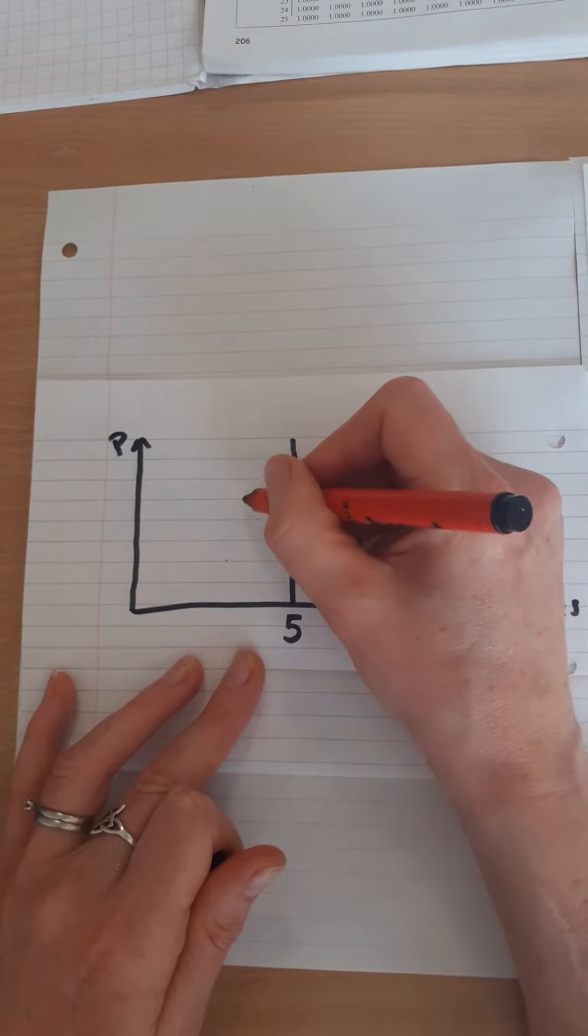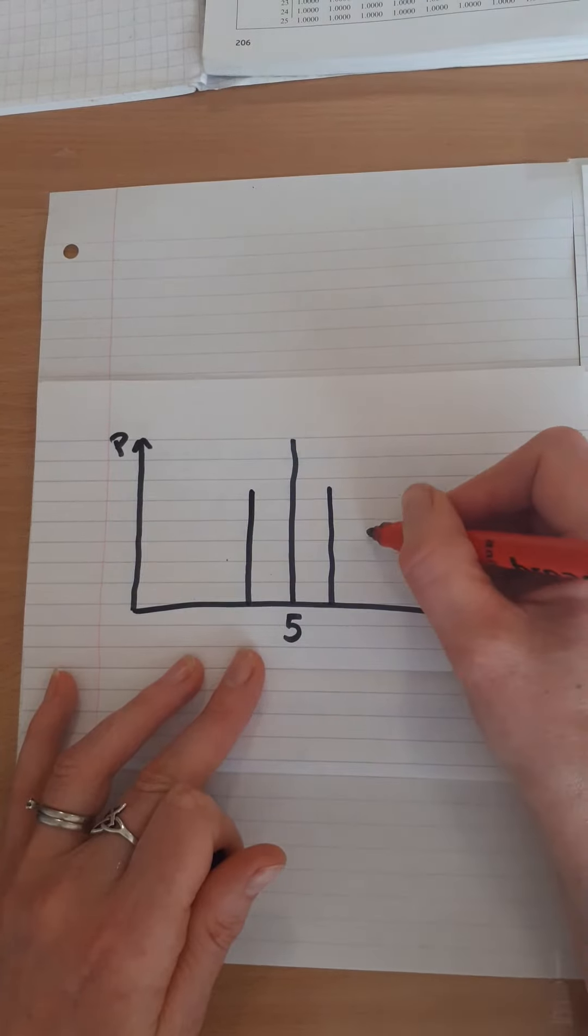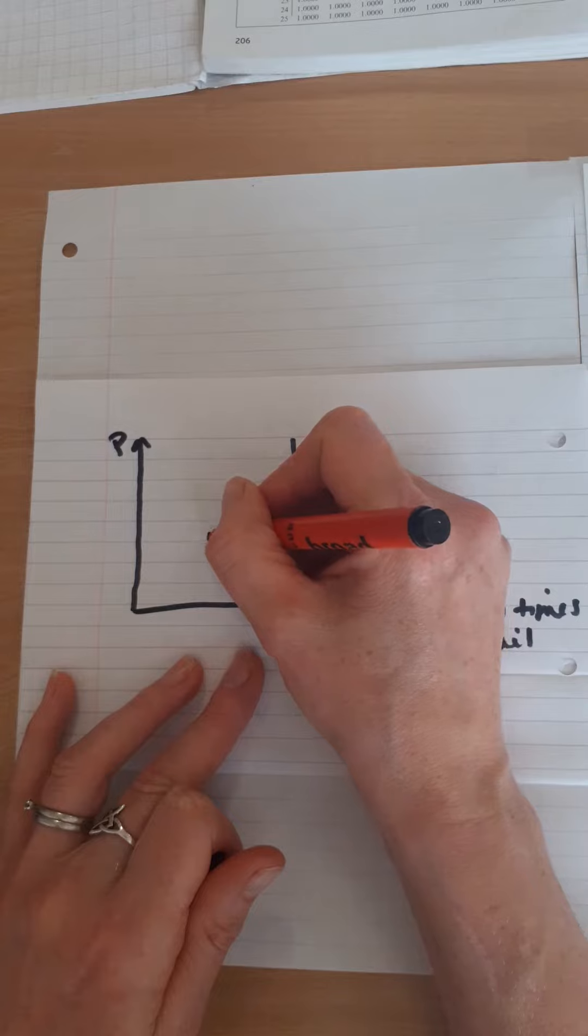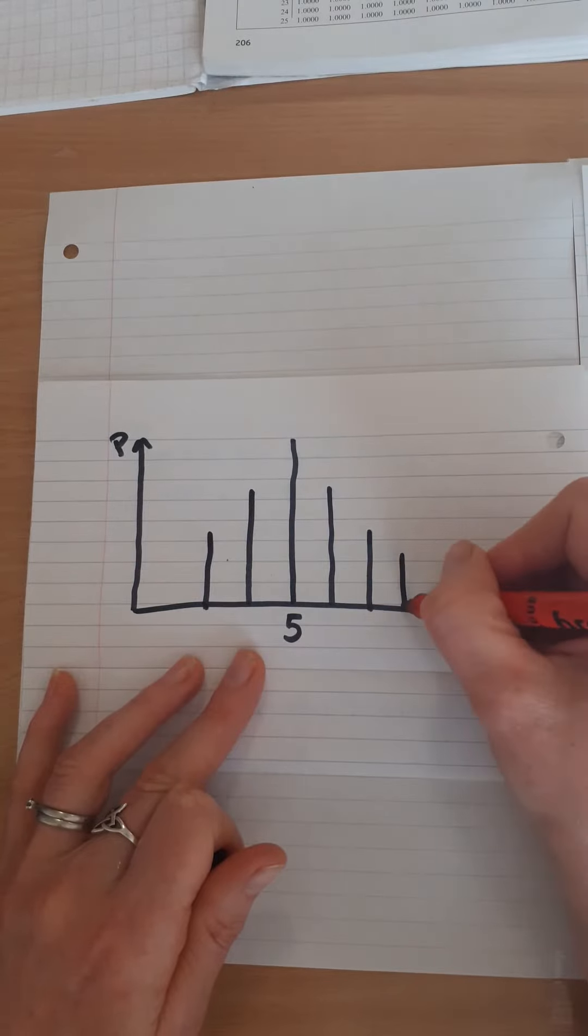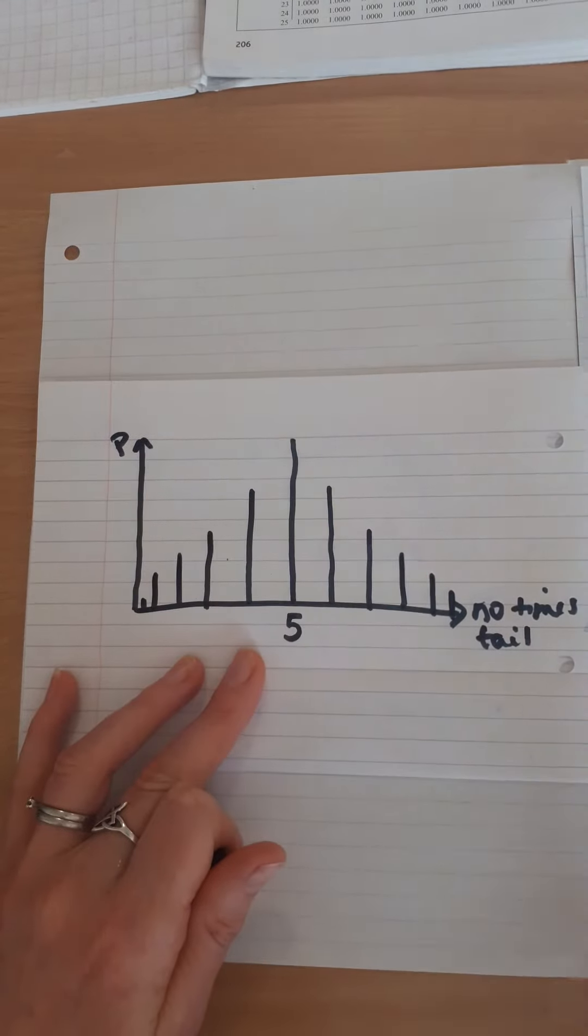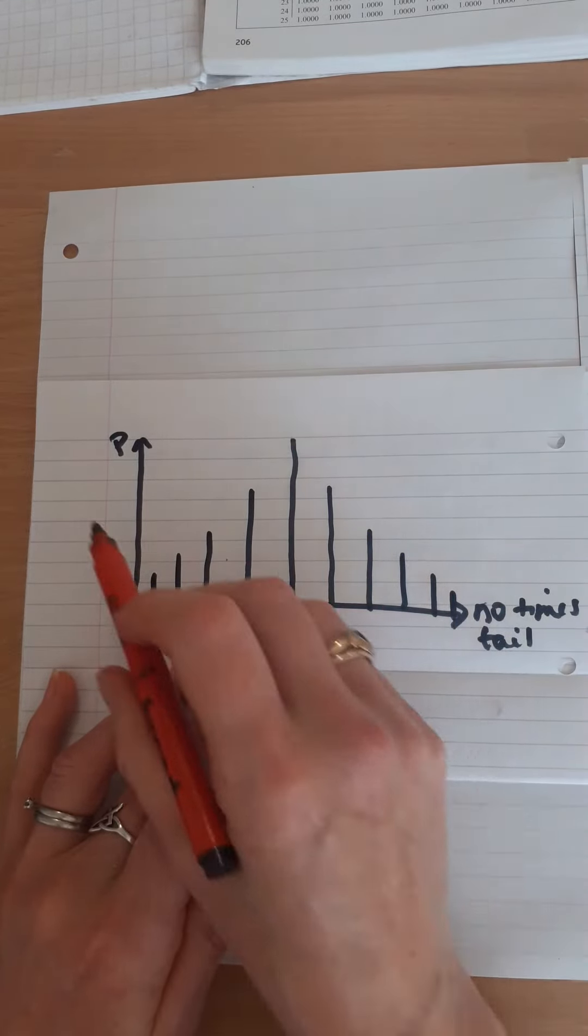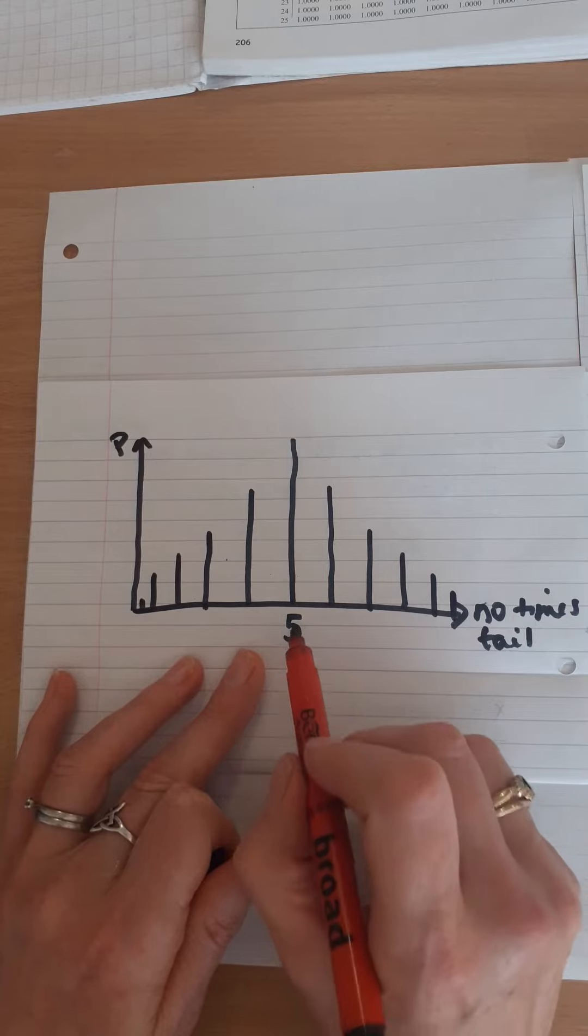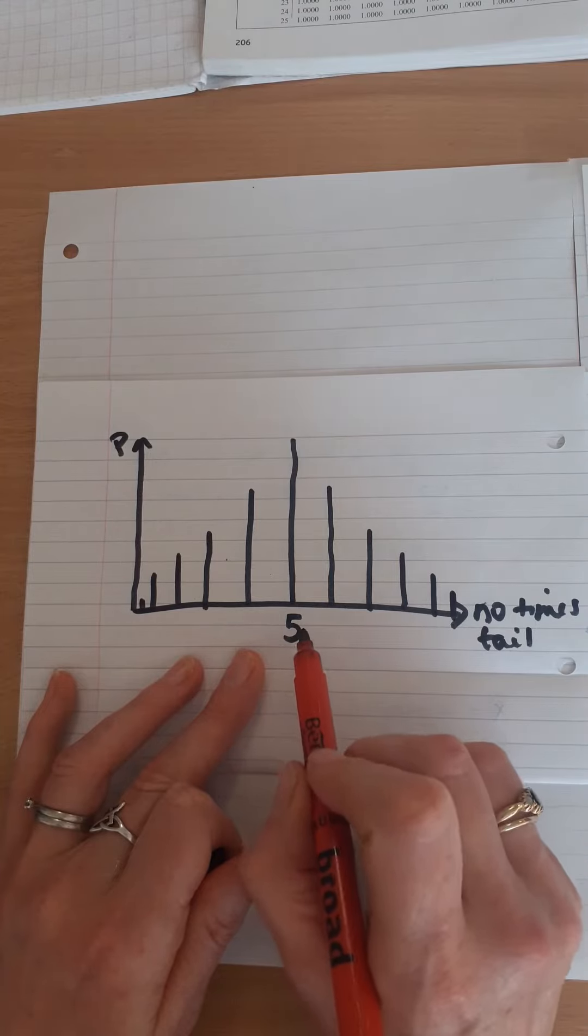I could easily get 6 or I could get 4. I could get 7 or I could get 3. 8, 9, 10, 2, 1, 0. So this is a probability distribution. I'm most likely to get 5 tails out of 10.